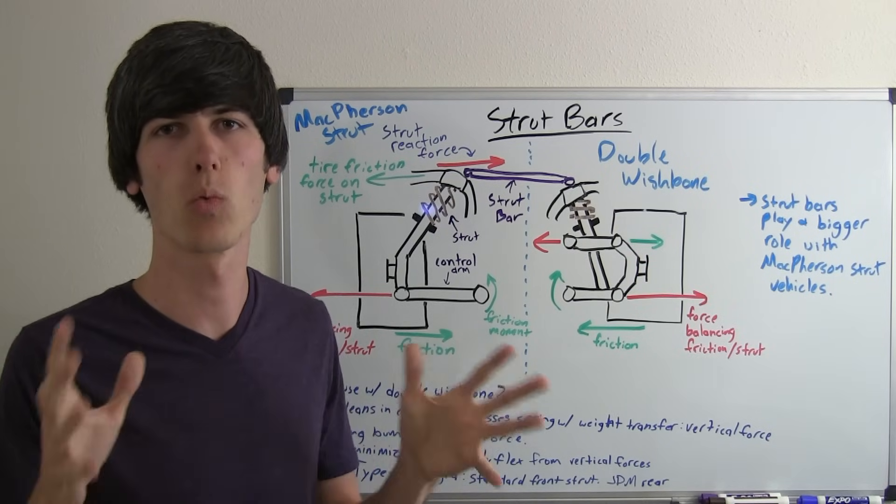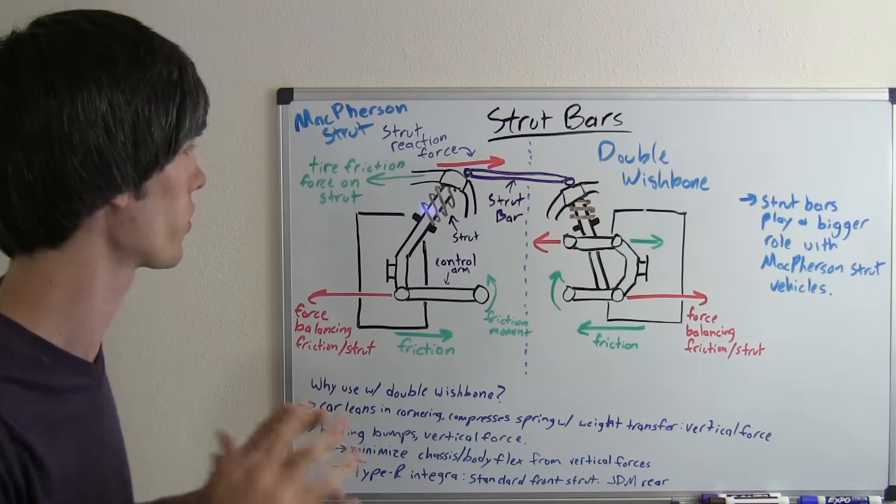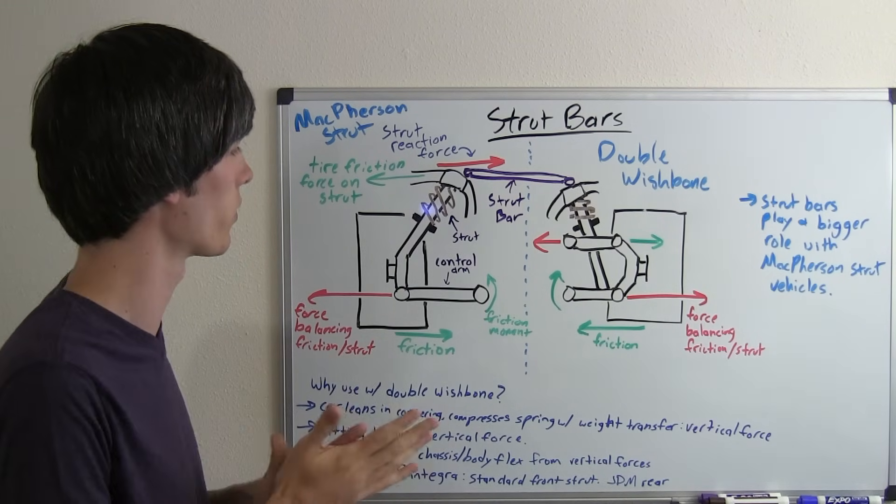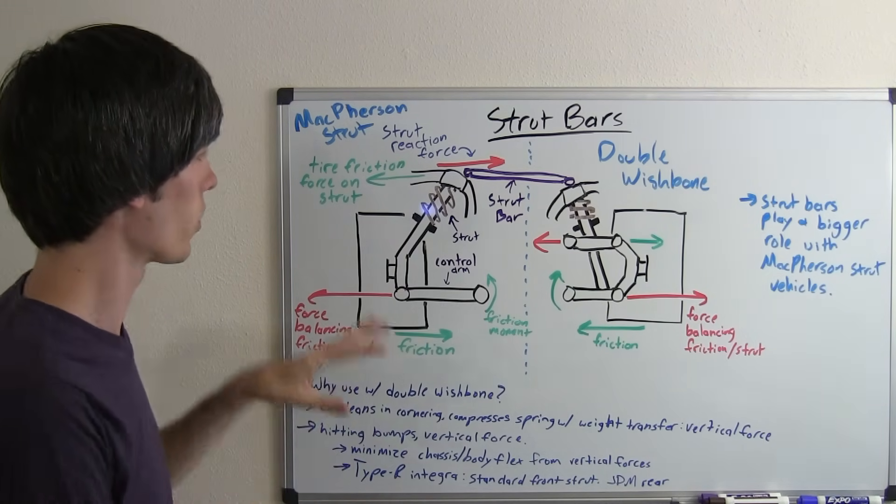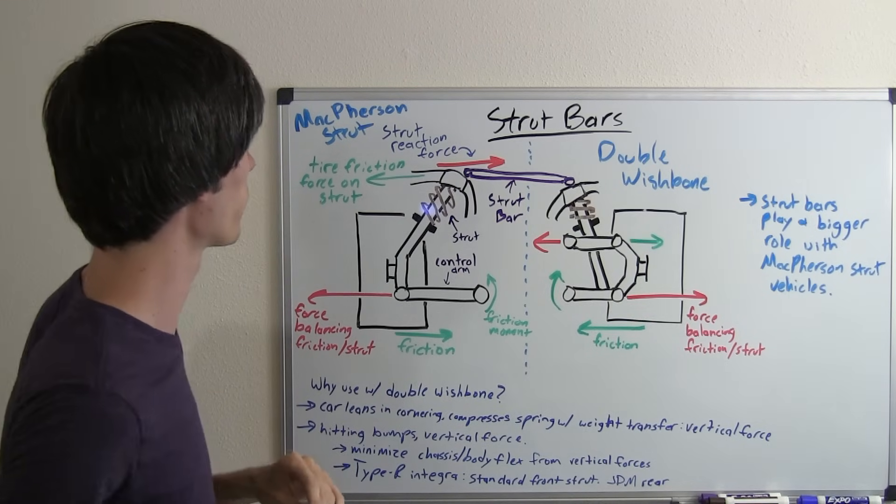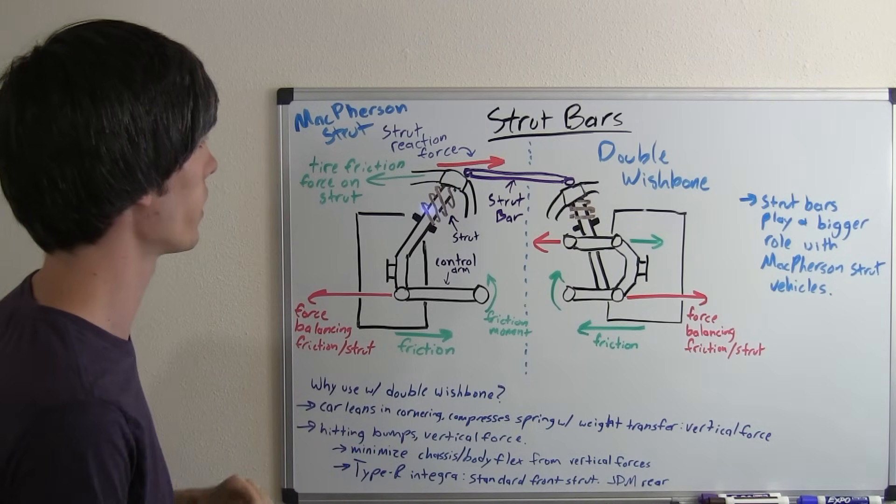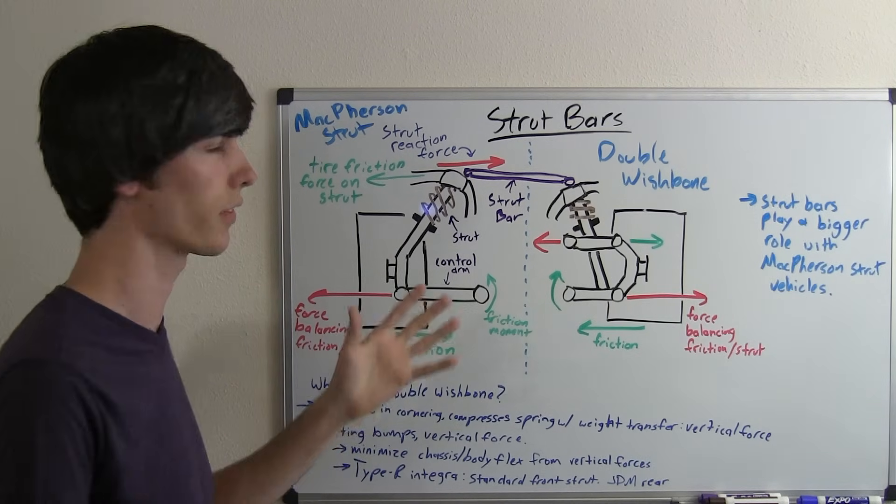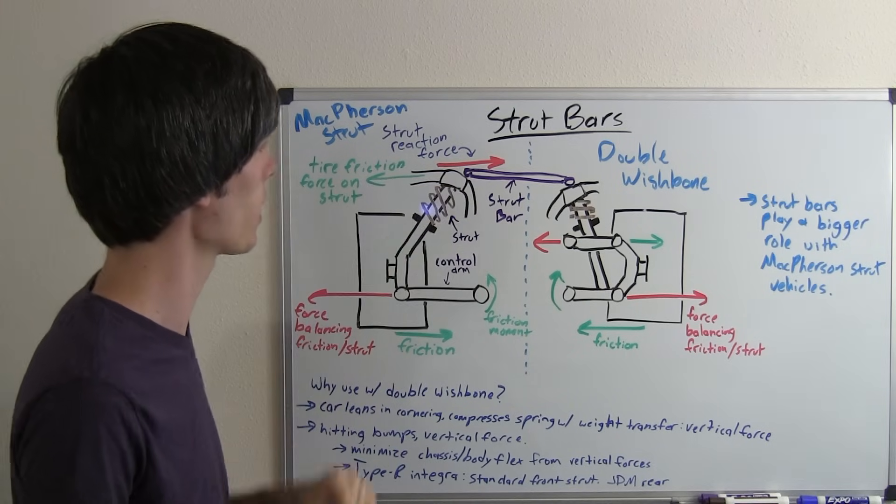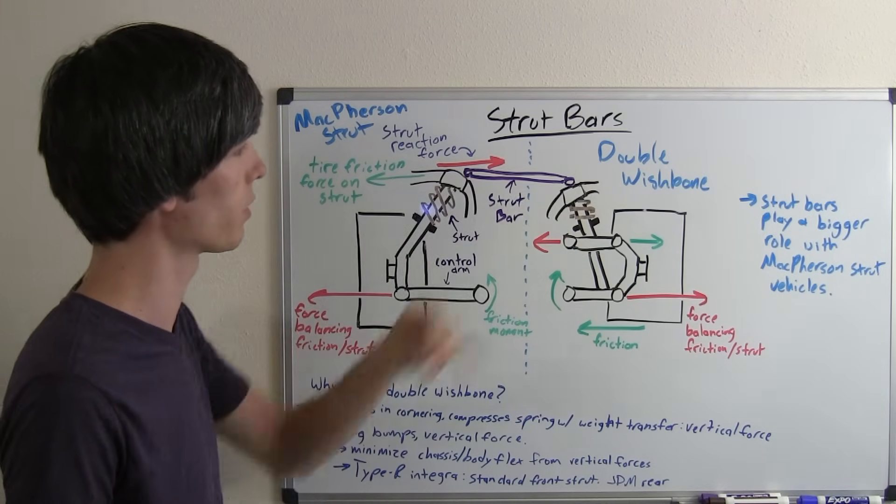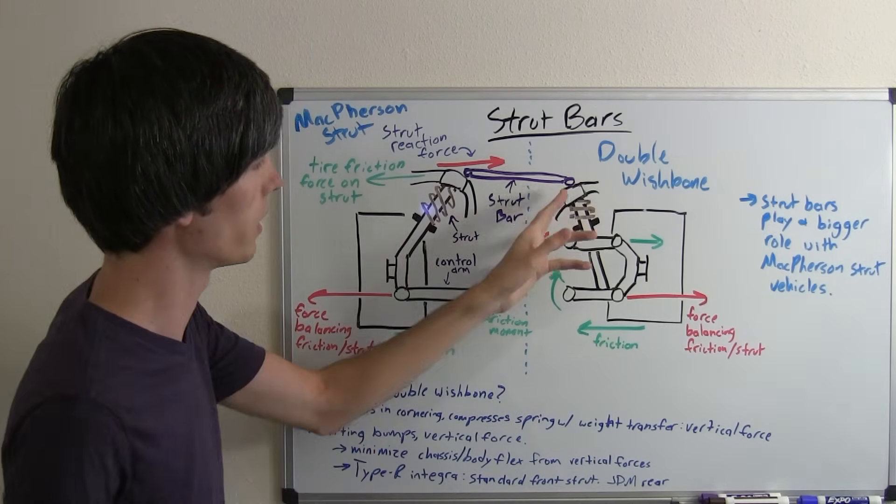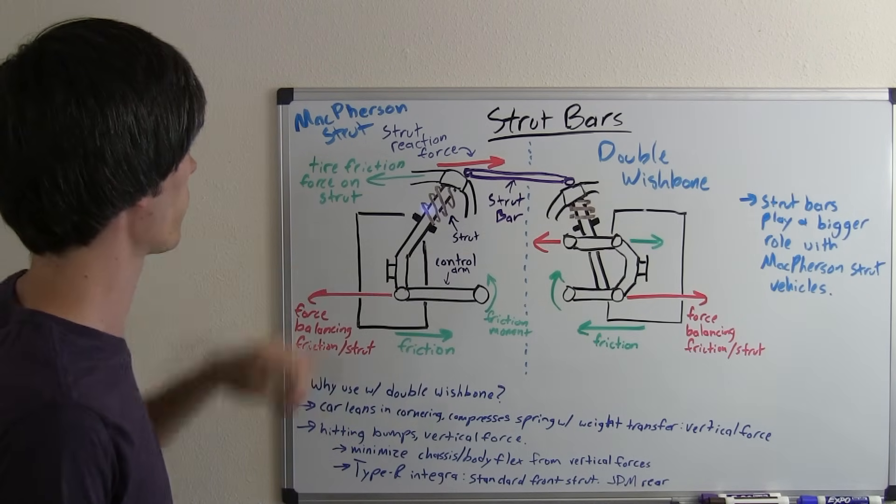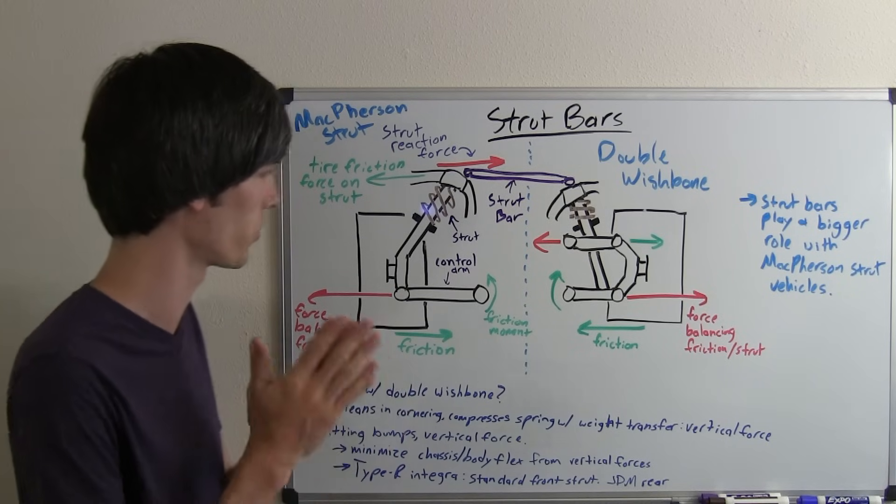Now that we understand where these strut bars are going to be installed, let's take a look and analyze the forces that are going on. I've got two different suspension setups here. One's a McPherson strut which is basically why strut bars are created. McPherson struts are load bearing at the top whereas double wishbones aren't really where the coilover connects. I've got a double wishbone here and McPherson strut here.